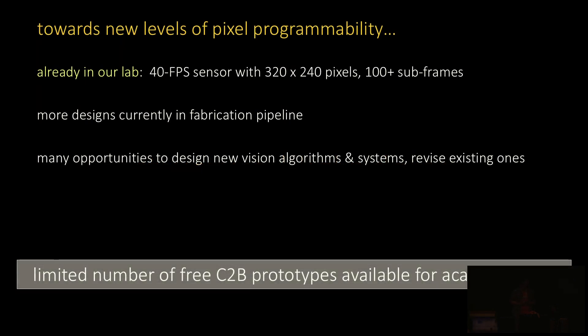The sensor I've talked about is just the first of a whole family of CMOS sensors that we're designing and fabricating at the University of Toronto. We're already testing a quarter-VGA version of the sensor in our lab, as well as sensors with other advanced features. And even though the algorithms we've implemented give promising results, generalizing existing vision techniques to make the most out of such a sensor is wide open. To facilitate this, we want to make a few C2B prototypes available to the research community for free. If you're interested in using one, please come talk to me or Kiros at the conference or send us an email. We're also going to have an informal demo at the end of the session.